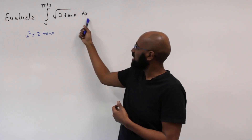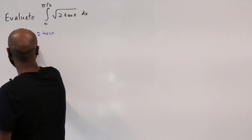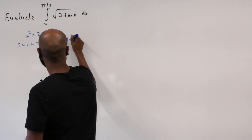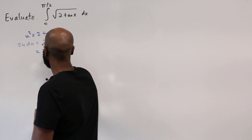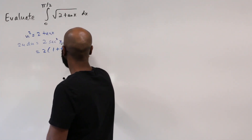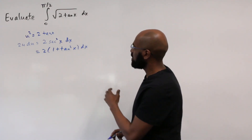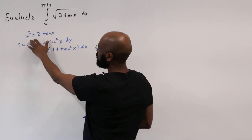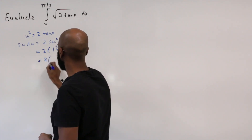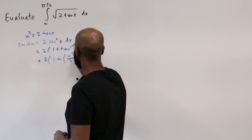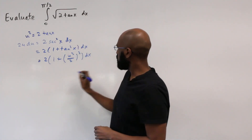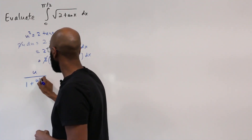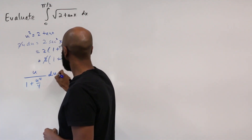Our goal is to represent dx in terms of du. If we differentiate each side, we get 2u du = 2 sec²x dx. And sec²x = 1 + tan²x. Now we want to represent this in terms of u. tan x we have in terms of u: tan x = u²/2. So this is 2(1 + u²/2)² dx.